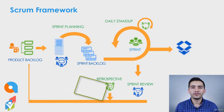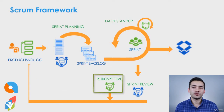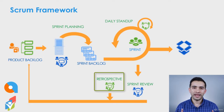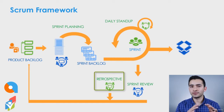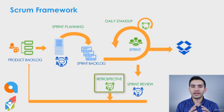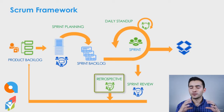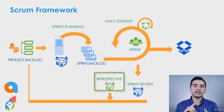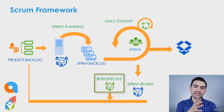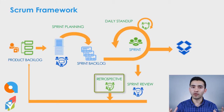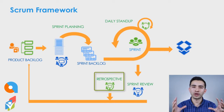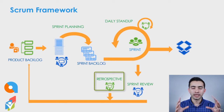The fourth ceremony of Scrum is called the Sprint Retrospective. Just like it sounds, we're looking at the sprint retrospectively — meaning what did the team do well, what didn't go well in this last sprint, and what should be improved.